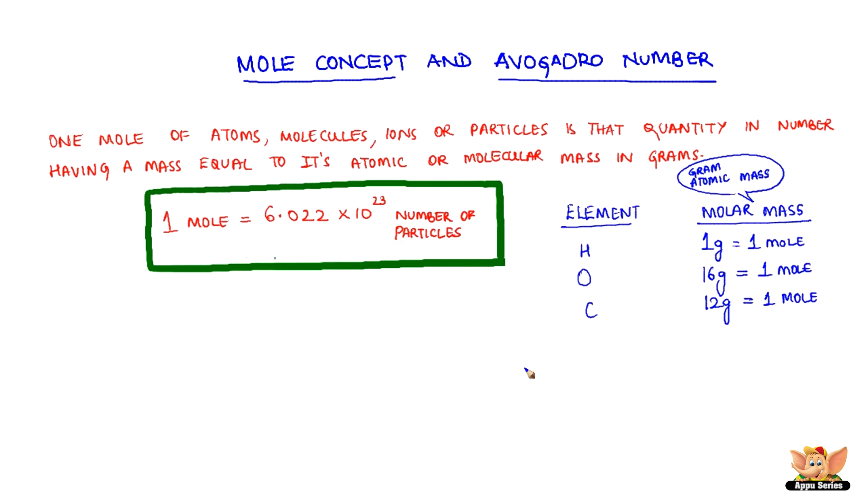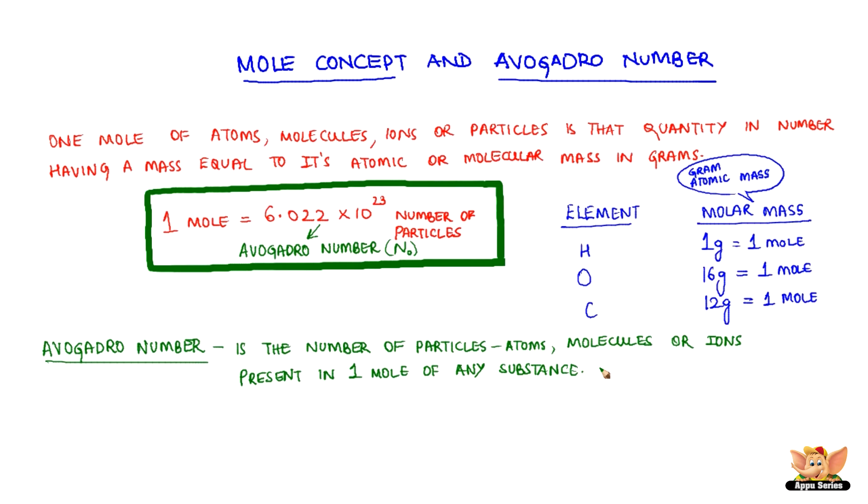This number 6.022 times 10 to the 23 is also called Avogadro's Number and is represented as N0. Avogadro Number is the number of particles, atoms, molecules or ions present in one mole of any substance.